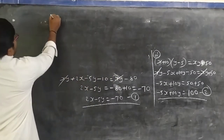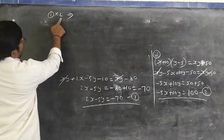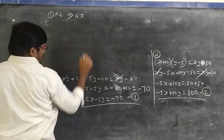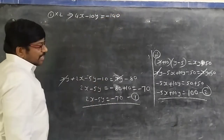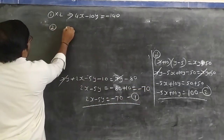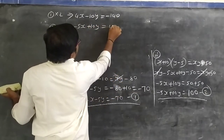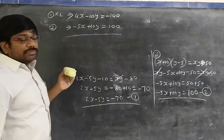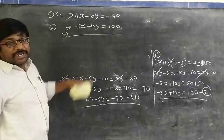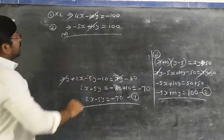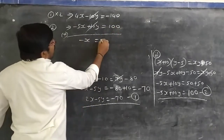Adding 4x − 10y = −140 and −5x + 10y = 100: the 10y terms cancel. So 4x − 5x = −140 + 100, giving −x = −40, hence x = 40.